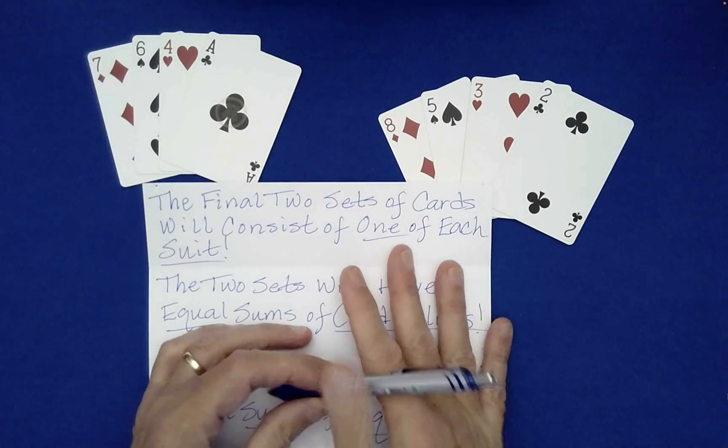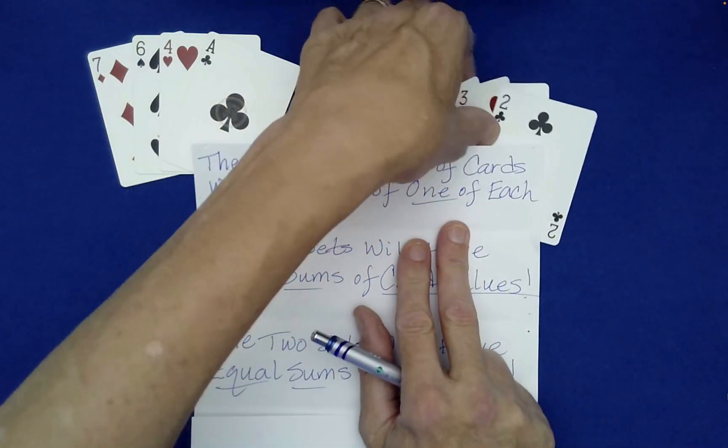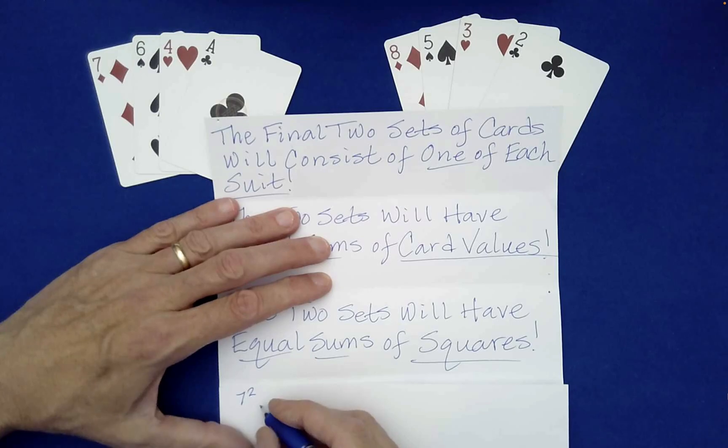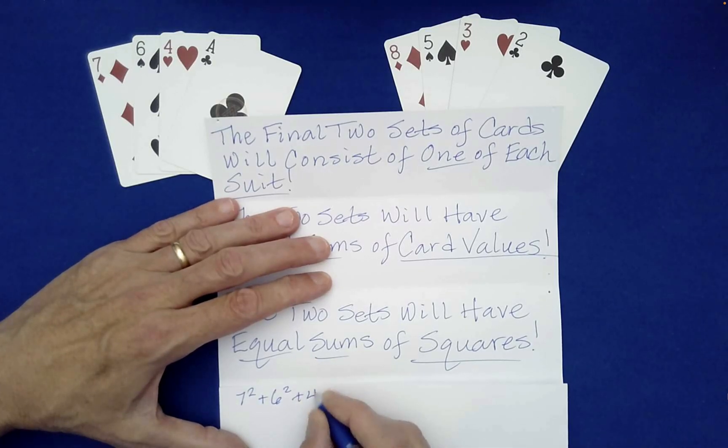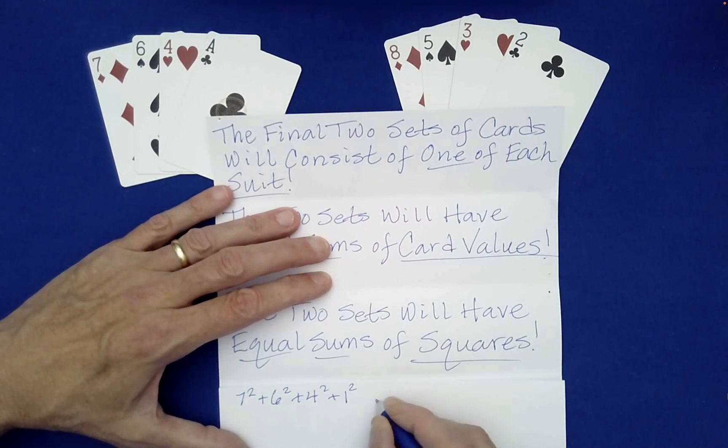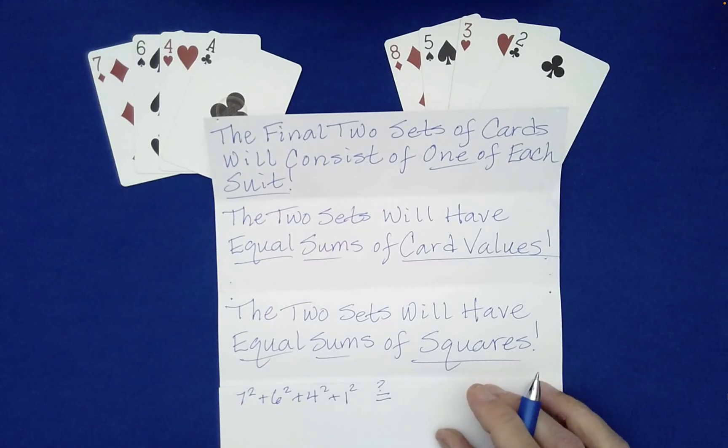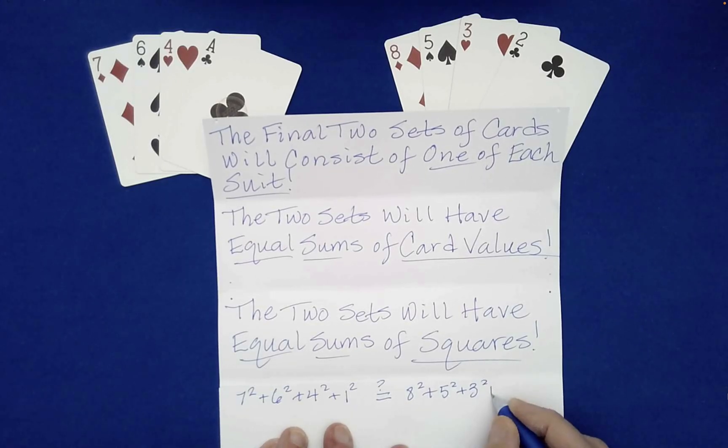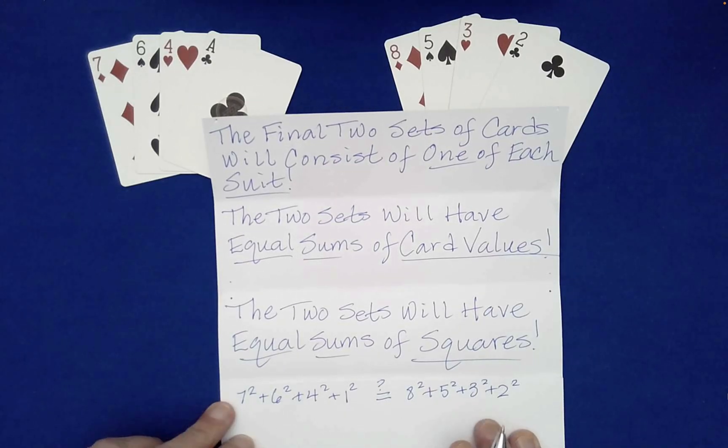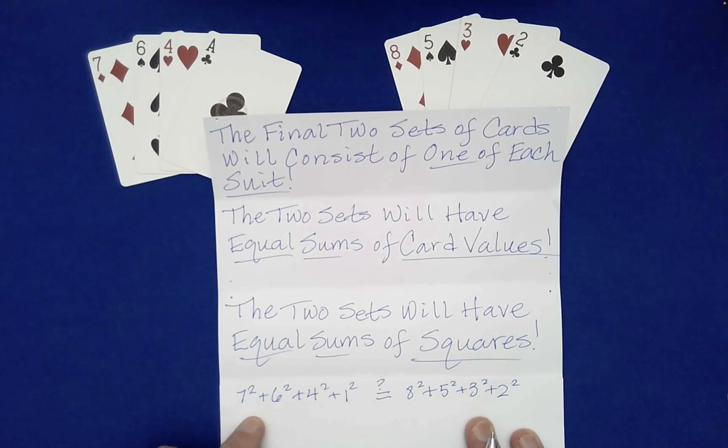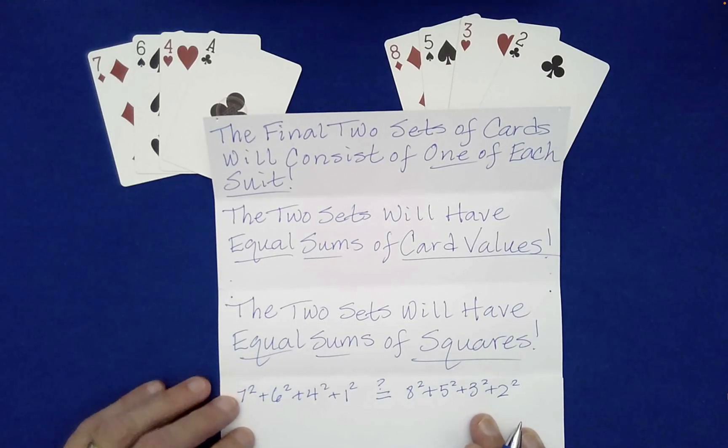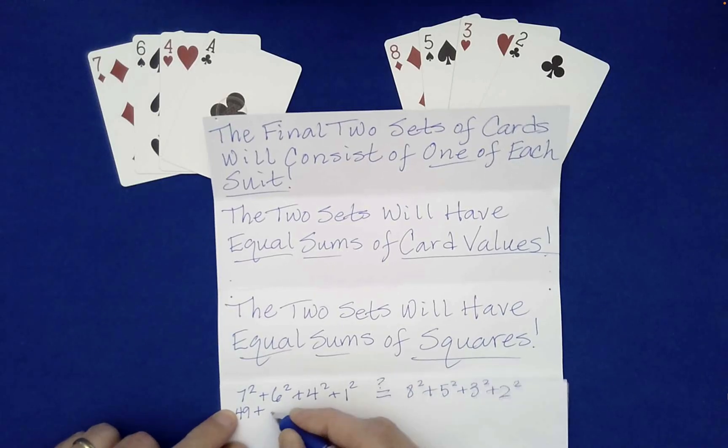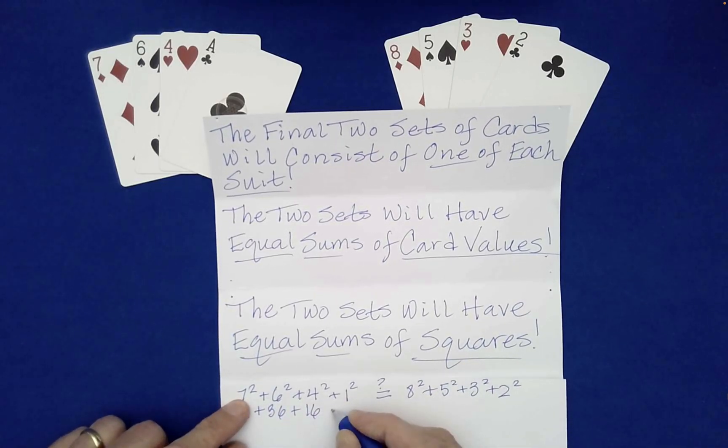What that means is we've shown right now that these add up to the same number, they both add up to 18. This crazy claim here is saying that if you square each of these numbers, add them, you'll get the same answer as squaring each of these numbers and adding them. Now we've left the realm of any plausibility of that happening by chance alone. Well, let's check to see if it's even true. So seven squared, what's seven squared? It's 49 plus six squared plus four squared plus ace will count as a one. Question, is that equal to eight squared plus five squared plus three squared plus two squared?